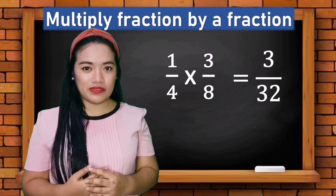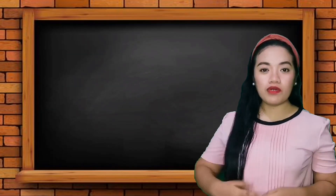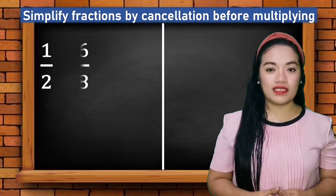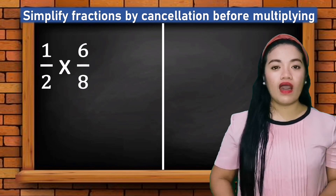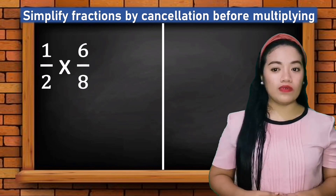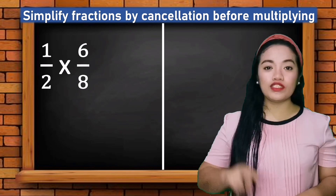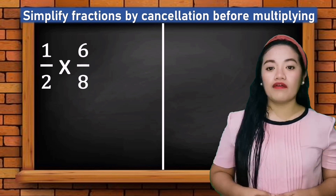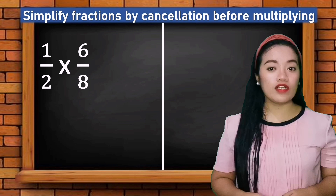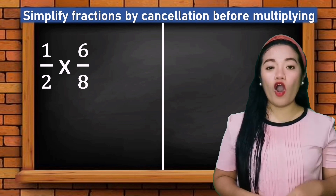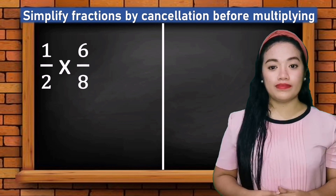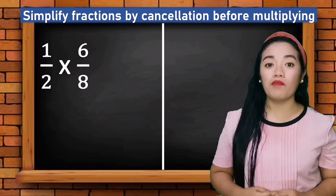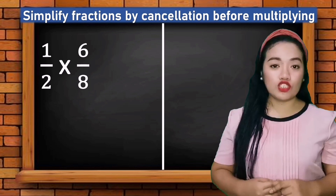Example number two: one half times six eighths. For this example I will show you two methods to solve this. The first method is the one we used in example one; the second is by cancellation before multiplying.